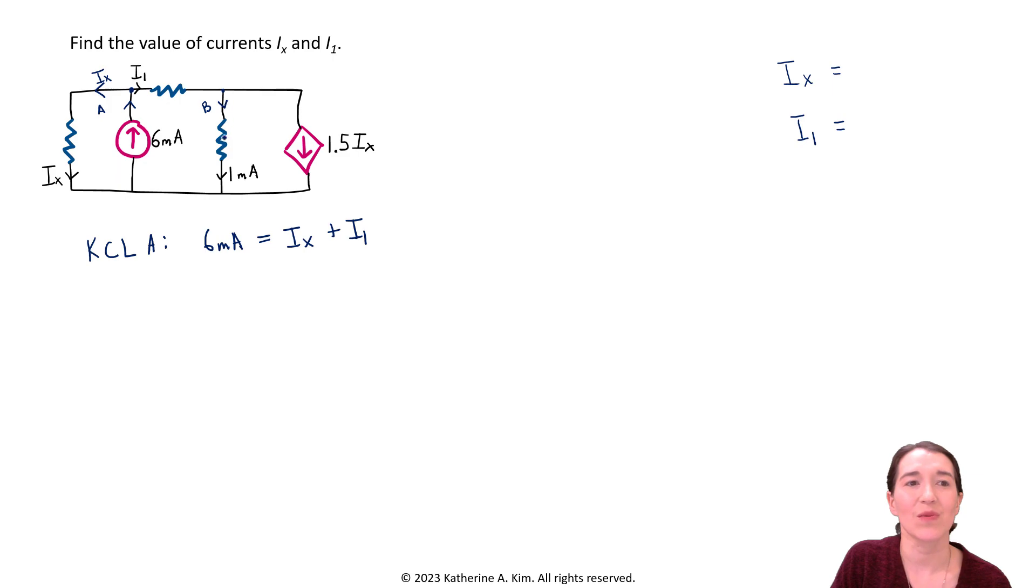So again, this one we have one milliamp coming down, it's going to continue through this and come to the other side. So we're going to have I1 coming in here. And then here we have 1.5 IX. We don't know what that is yet, but we know the direction of the current. So let's just draw that right here, 1.5 IX. And you can see now we've defined this current is going in I1 and these two currents are coming out. So let's apply KCL again.